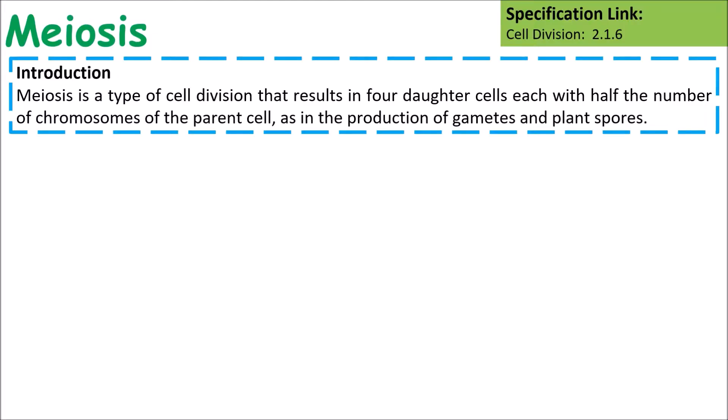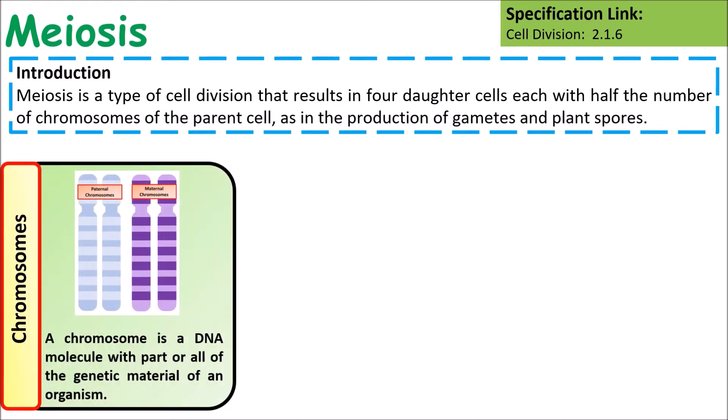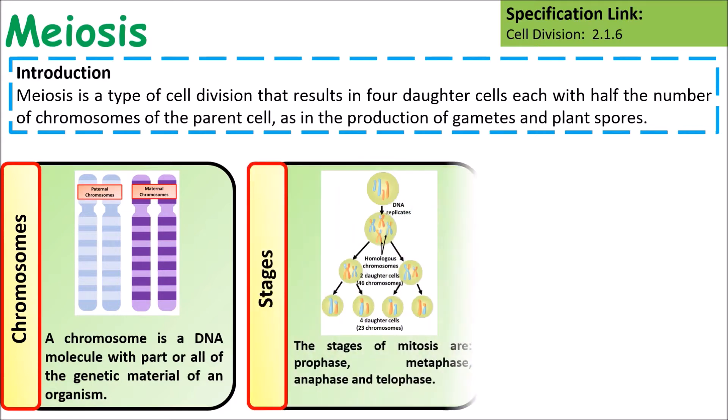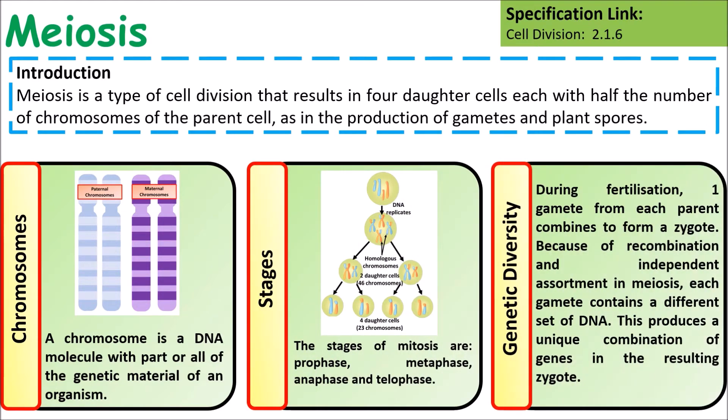Meiosis is a type of cell division that results in four daughter cells, each with half the number of chromosomes of the parent cell. Some key things to think about throughout are the chromosomes, the stages of meiosis, and how that leads to genetic diversity.